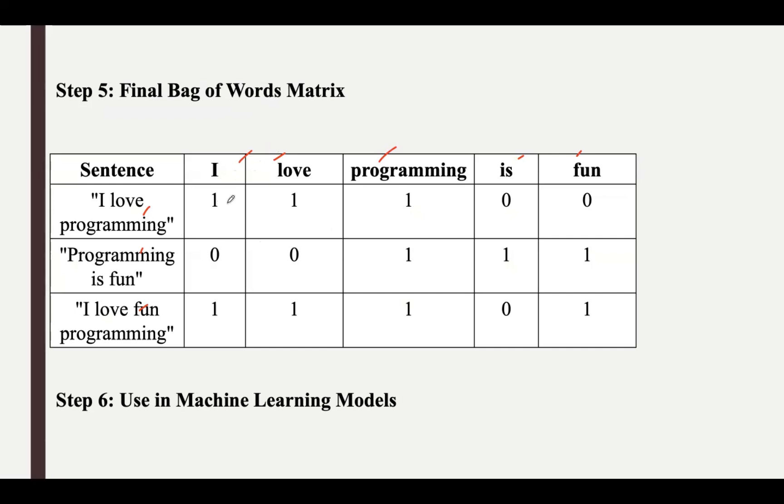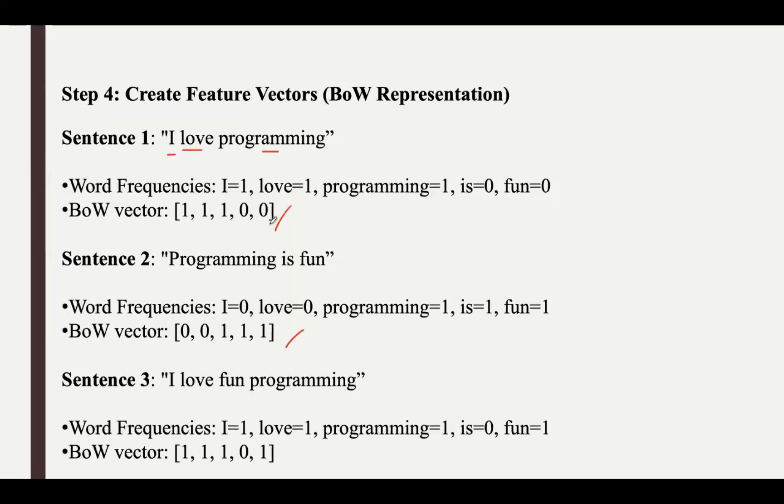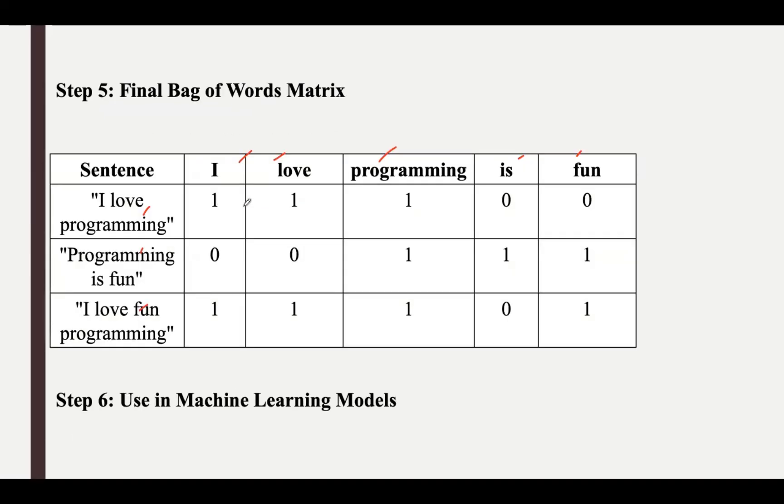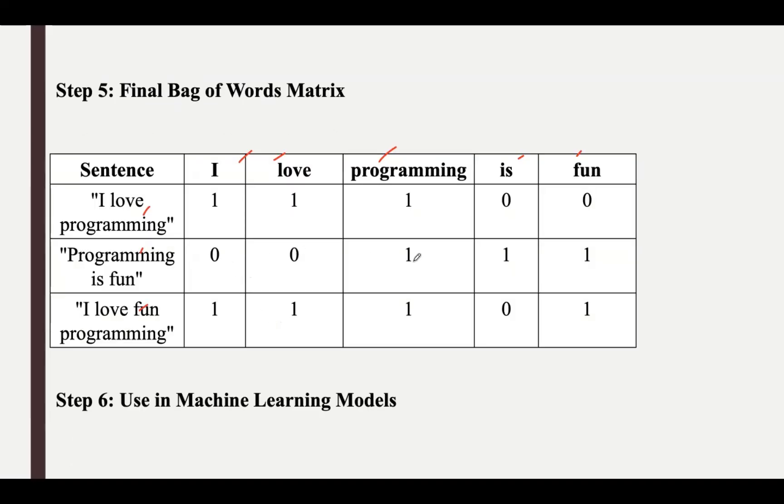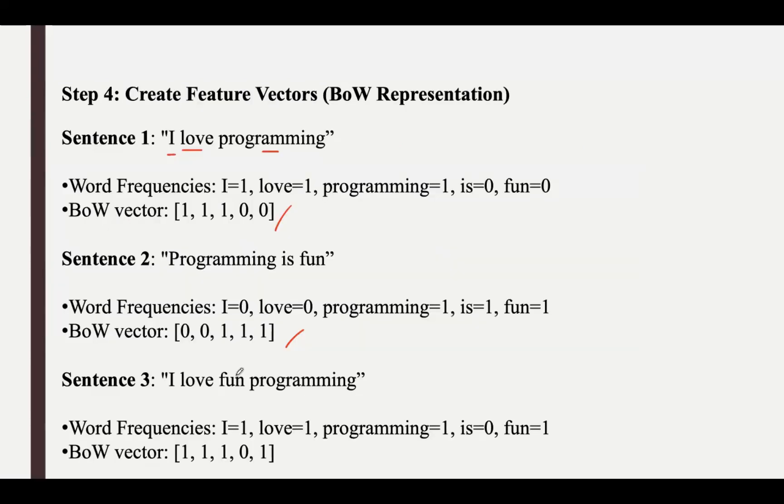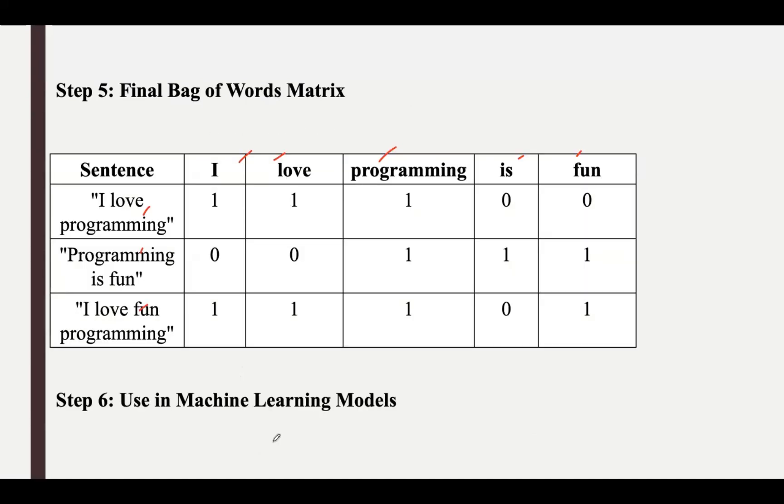The vectors which we got before for the sentences, you can place them as is. The first one has value 1, 1, 1, 0, 0, corresponding to sentence 'I love programming.' For the second one, 0, 0, 1, 1, 1 for the second sentence. And for the third sentence it is 1, 1, 1, 0, 1. This is how we construct the matrix.